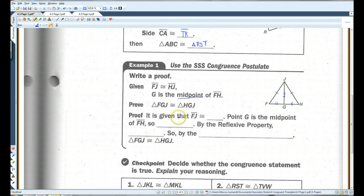So, it is given that FJ is congruent to JH. That's a given. Point G is the midpoint of FH. So, FG is congruent to GH or HG. And by reflexive property, JG is congruent to itself.